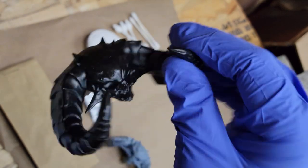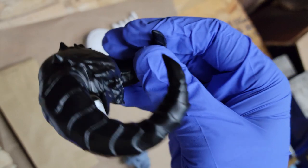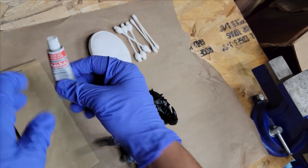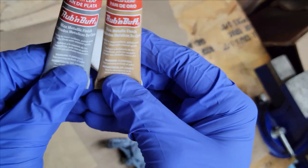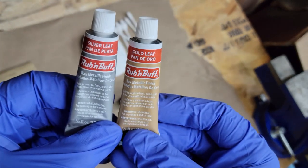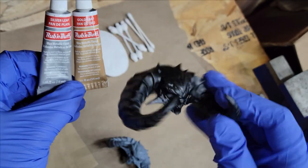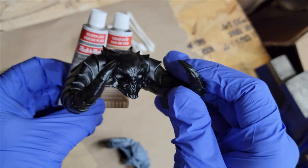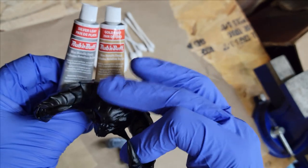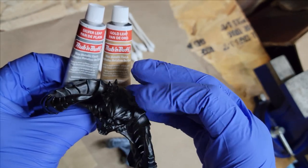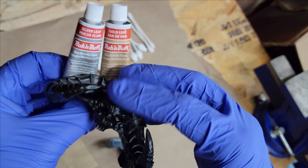For the materials, I have the two rub and buff colors. They make different colors, but I have the gold leaf and the silver leaf. I'm going to try using both of them. For the skull, the head itself, I'm going to apply the gold onto it, and then the silver onto the horns. We'll see what that looks like.